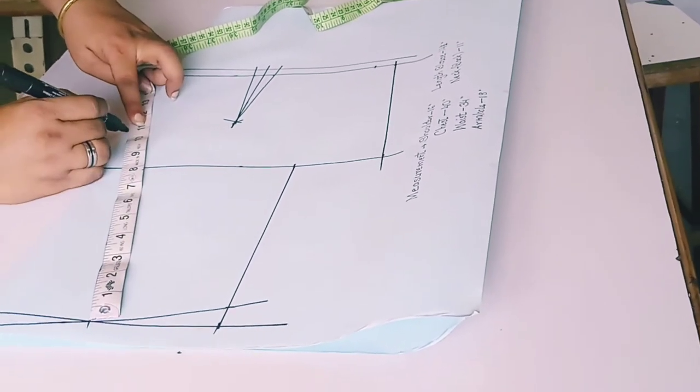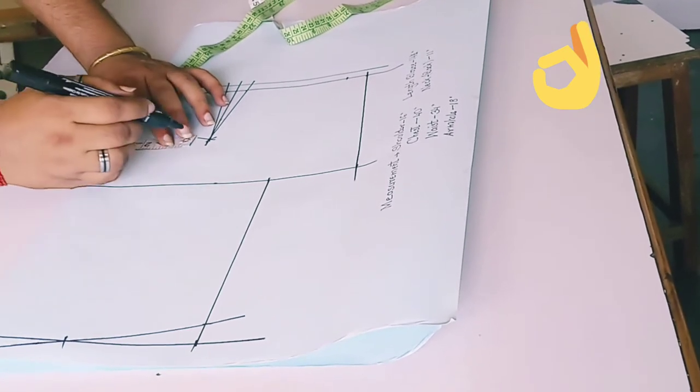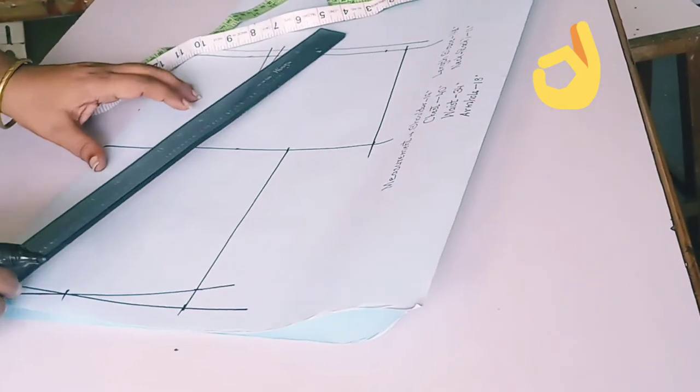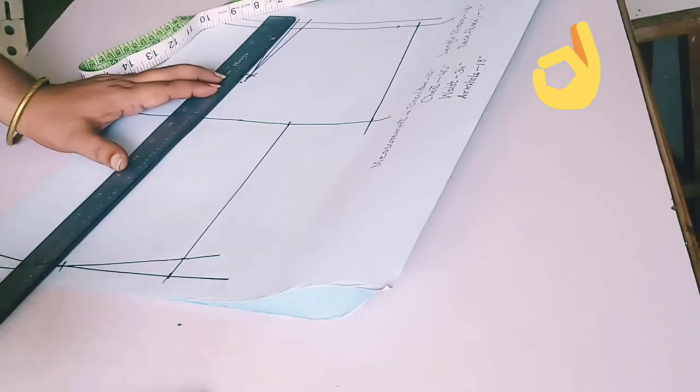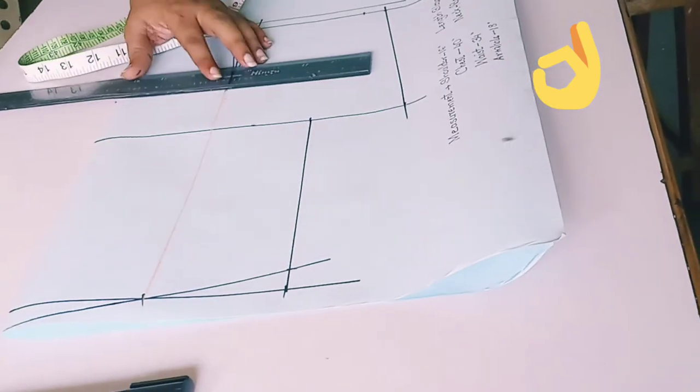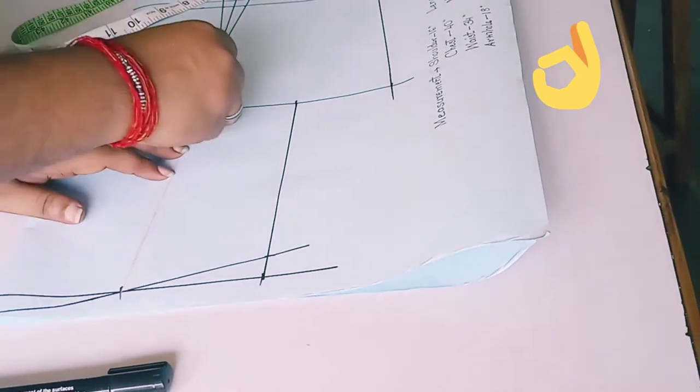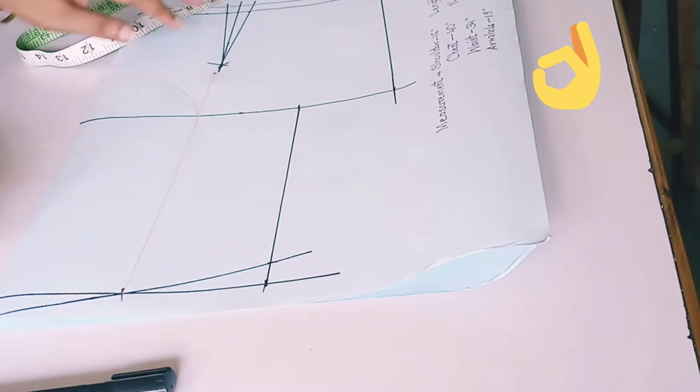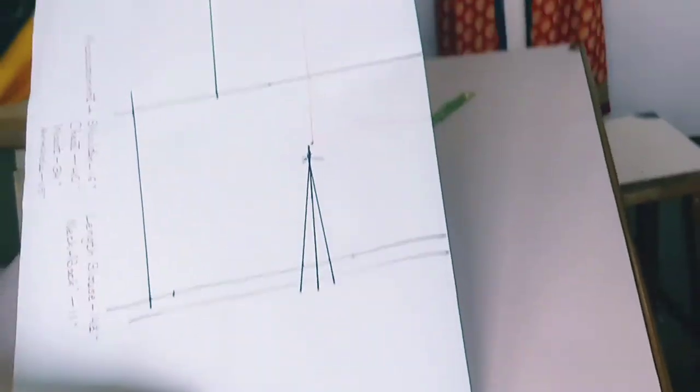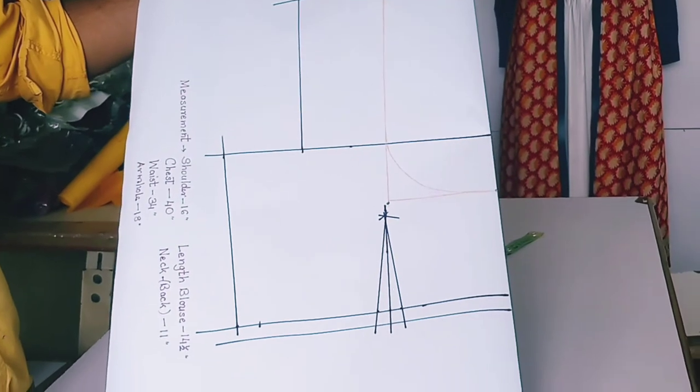Now we are marking your neckline. Back neck is 11, 1/4 inch. Make straight line here, make straight line here, so that in this area only you have to give the curve of your neckline. This is your neck mark. Neck is done.